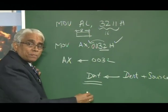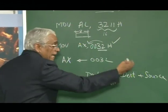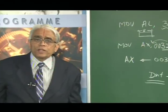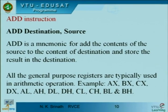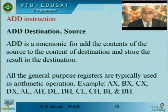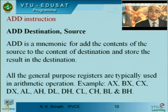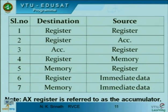The destination operand is always mentioned first and the source operand is mentioned second. For this operation, all registers AX, BX, CX, DX, AL, AH, BL, BH, CL, CH, DH are possible. Note that some registers are 16-bit and some are 8-bit — you can use either 8-bit or 16-bit registers for the addition operation. The combinations include register to register, register to accumulator, accumulator to register, register to memory, memory to register, register with immediate data, and memory with immediate data.